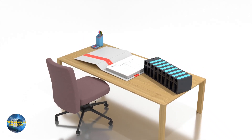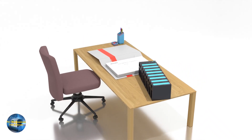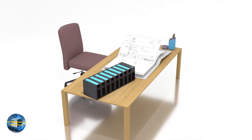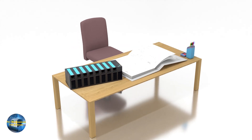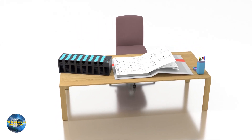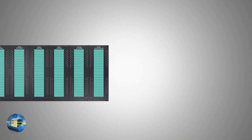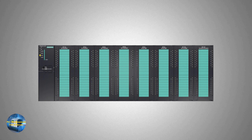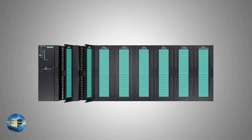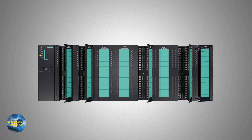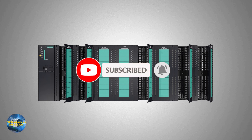Welcome to Part 3 of the video tutorial series 'How to Read Electrical Diagrams.' In today's tutorial we will learn how to read and understand the wiring for PLC outputs, including digital outputs and analog outputs. Before starting, I would highly recommend you subscribe to my channel and press the bell icon to get notified for upcoming video tutorials.